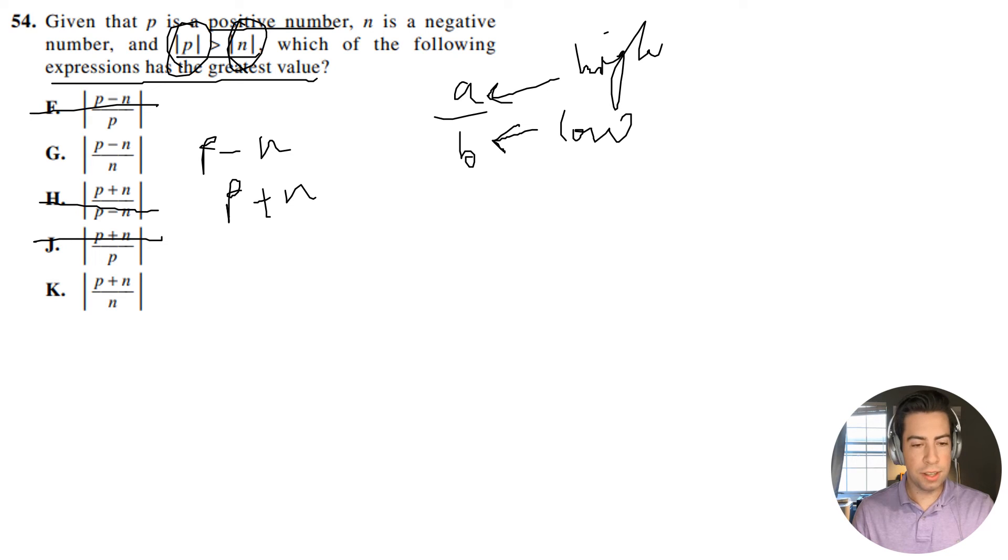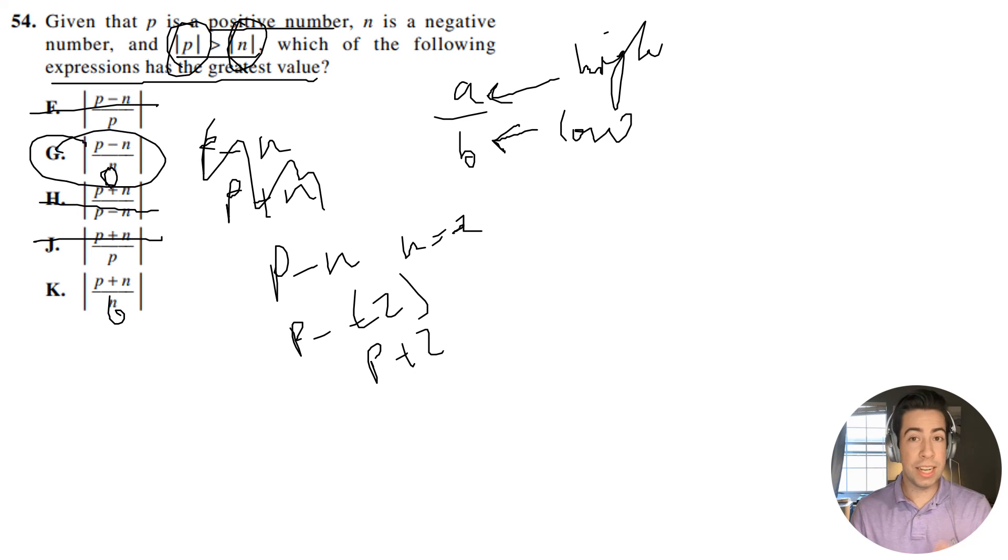Let's write it this way: P minus N. Now if N equals negative 2, this is really P minus minus 2, which is really P plus 2. So actually, this is going to give us a large numerator, and we have the same denominator in both cases. So it's going to be G because we get a larger numerator.